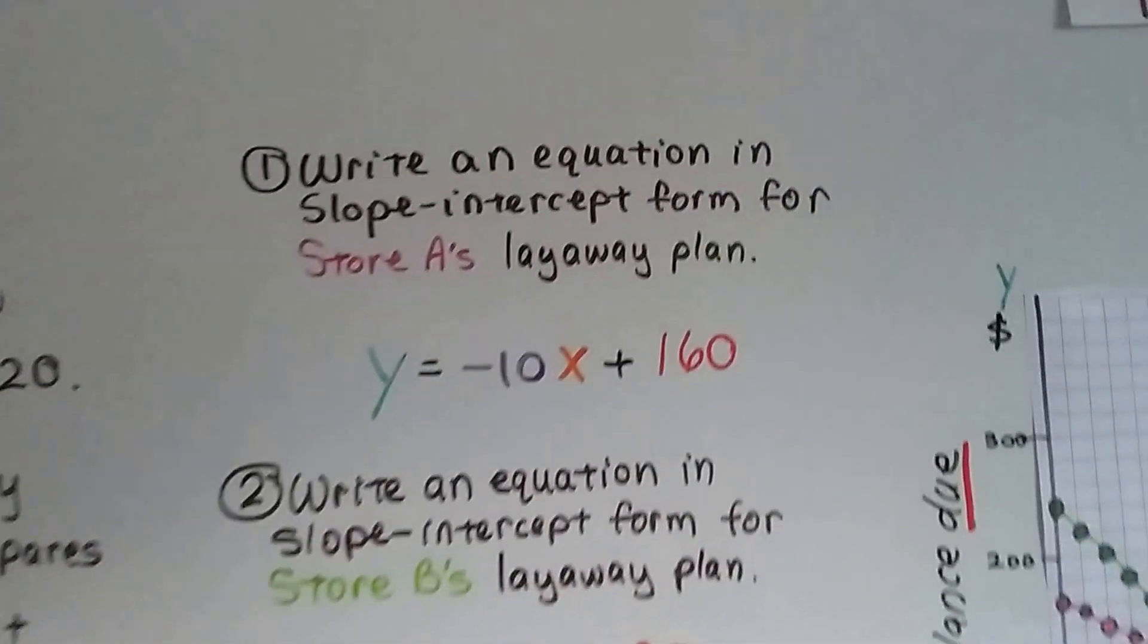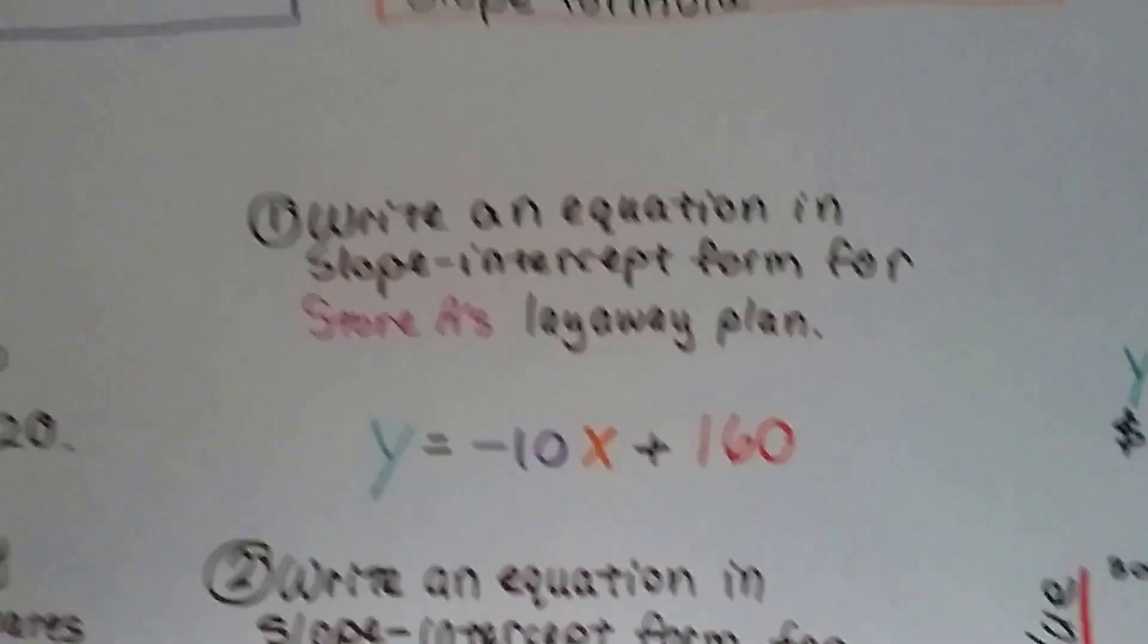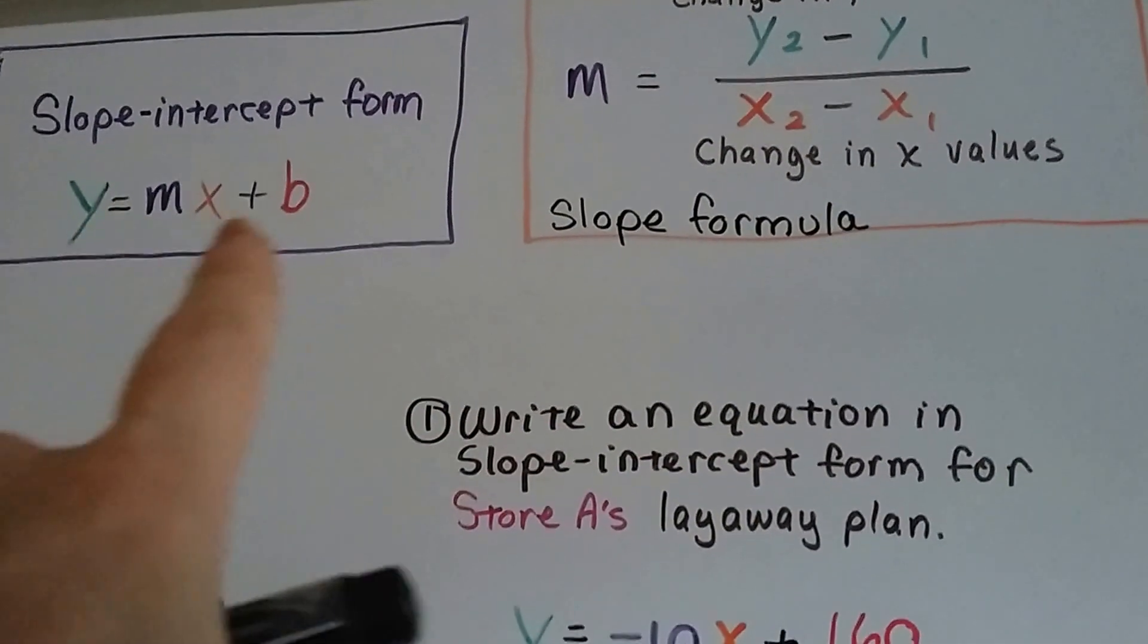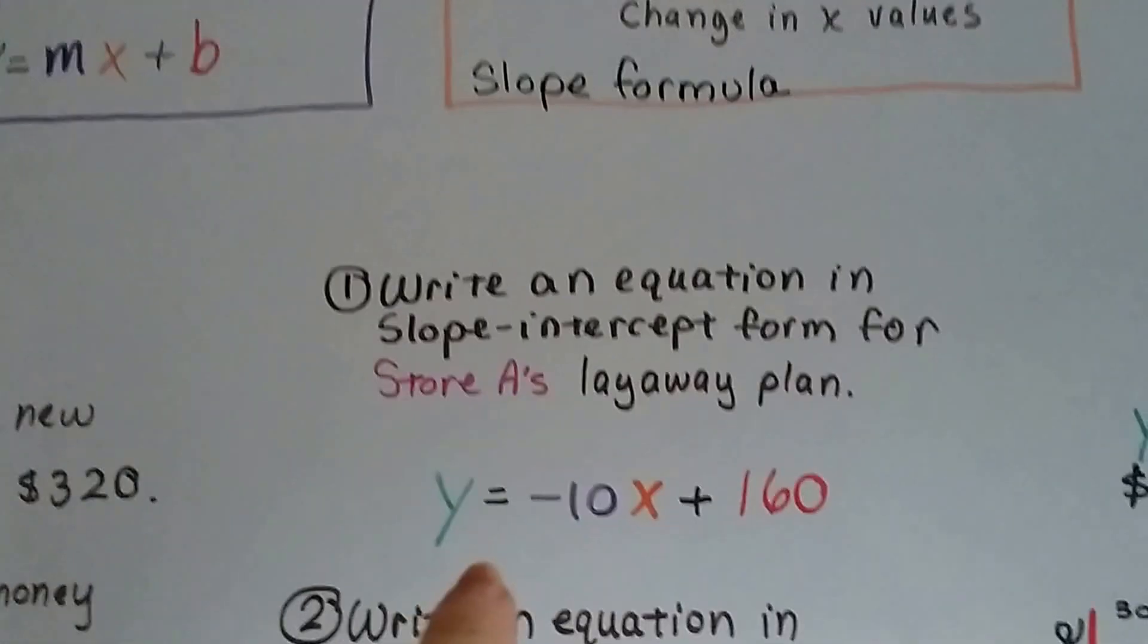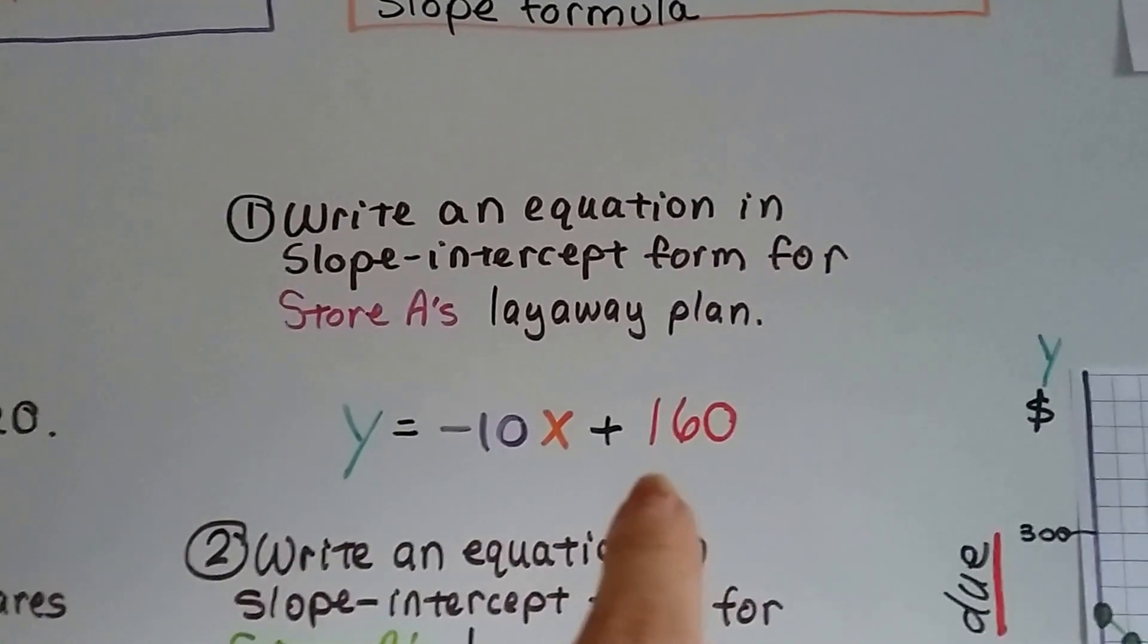So the first thing we do is write an equation in slope intercept form for store A's layaway plan. Remember, slope intercept form is like this.